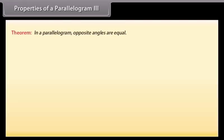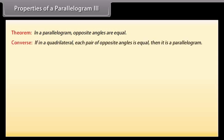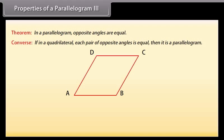Properties of a parallelogram 3: Another property of a parallelogram says that in a parallelogram, opposite angles are equal. The converse of this theorem says that if in a quadrilateral each pair of opposite angles is equal, then it is a parallelogram. Now, draw parallelogram ABCD with both diagonals intersecting at point O.